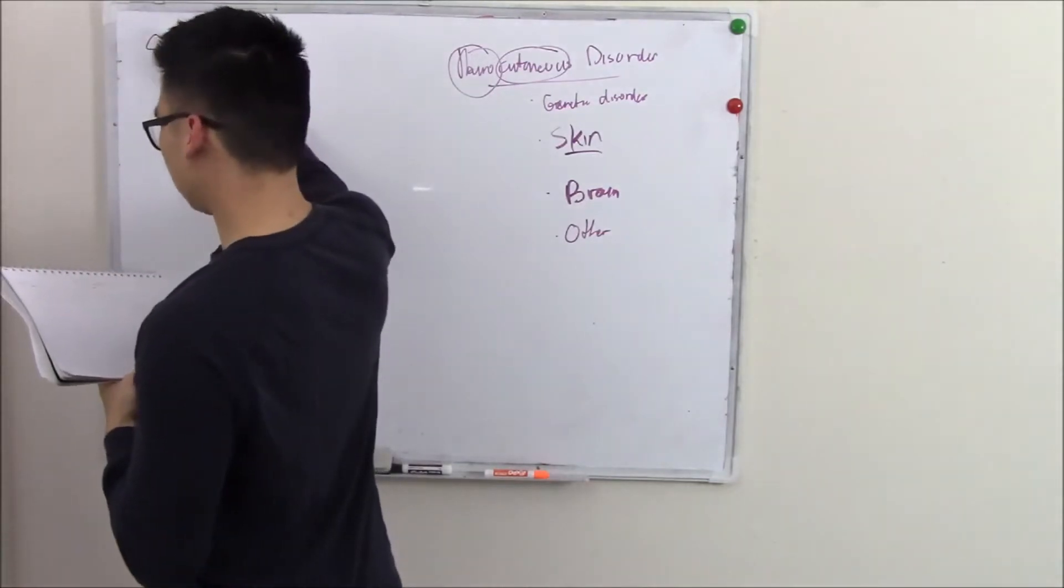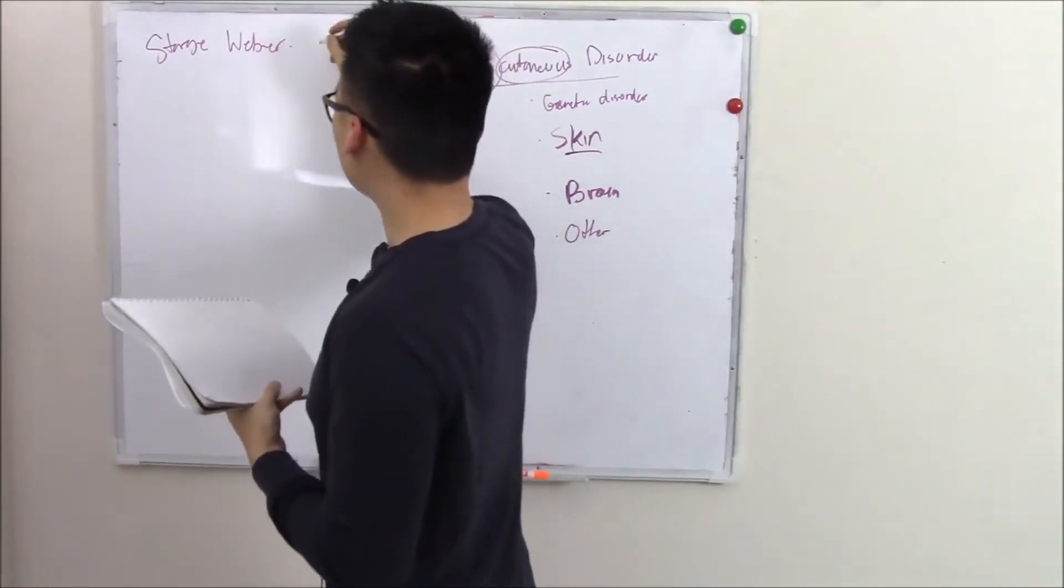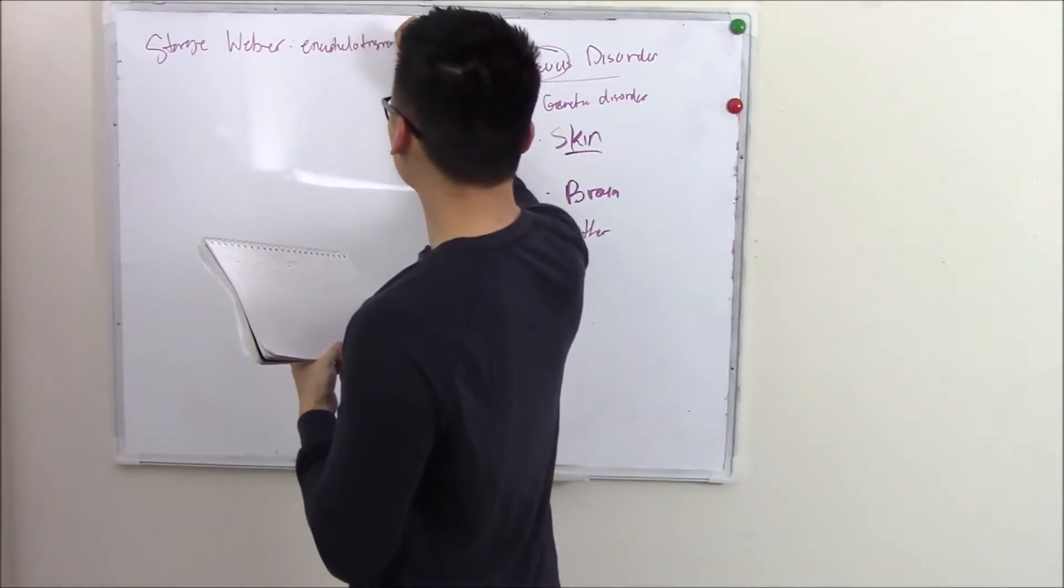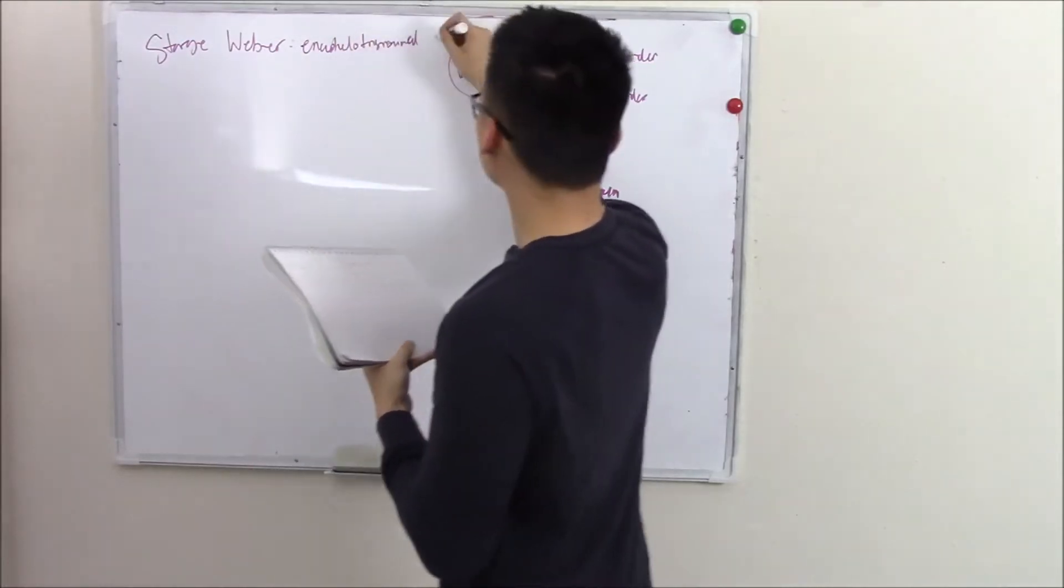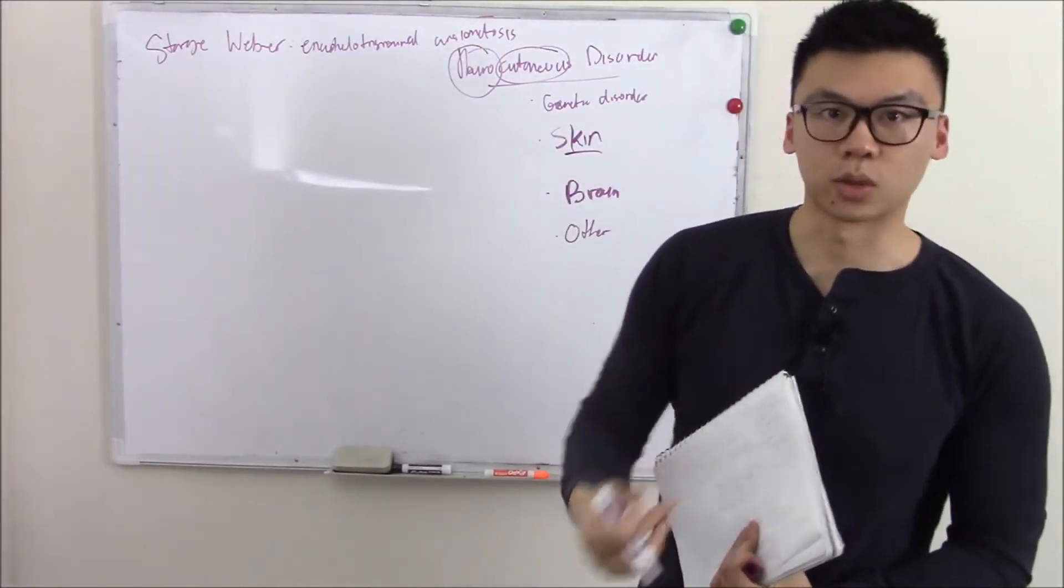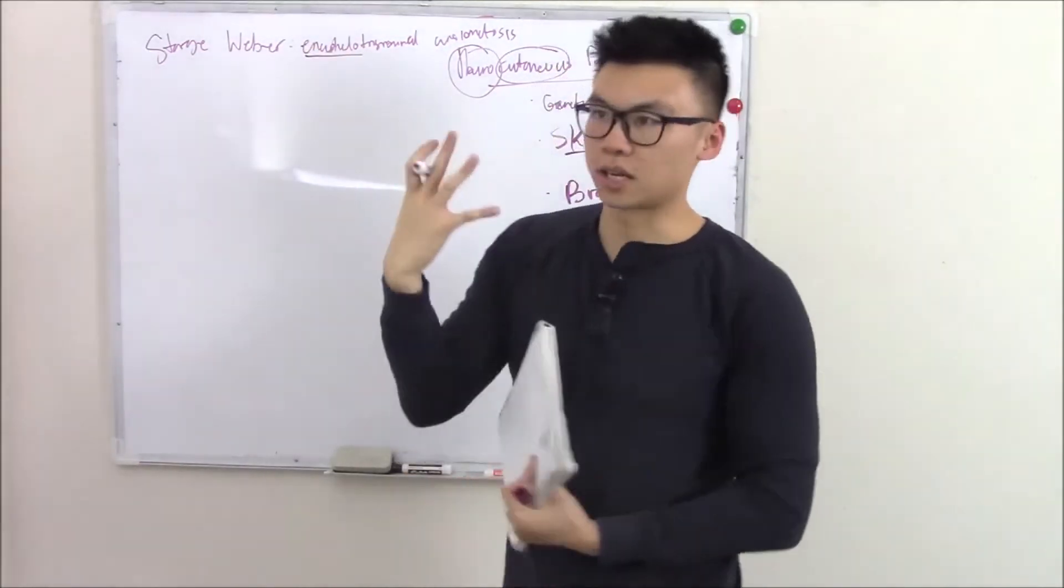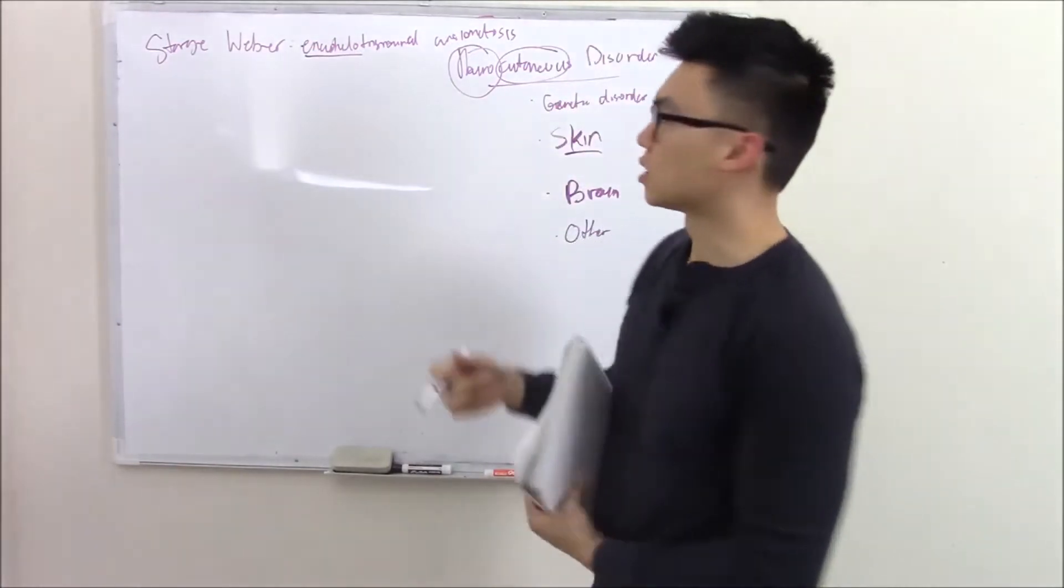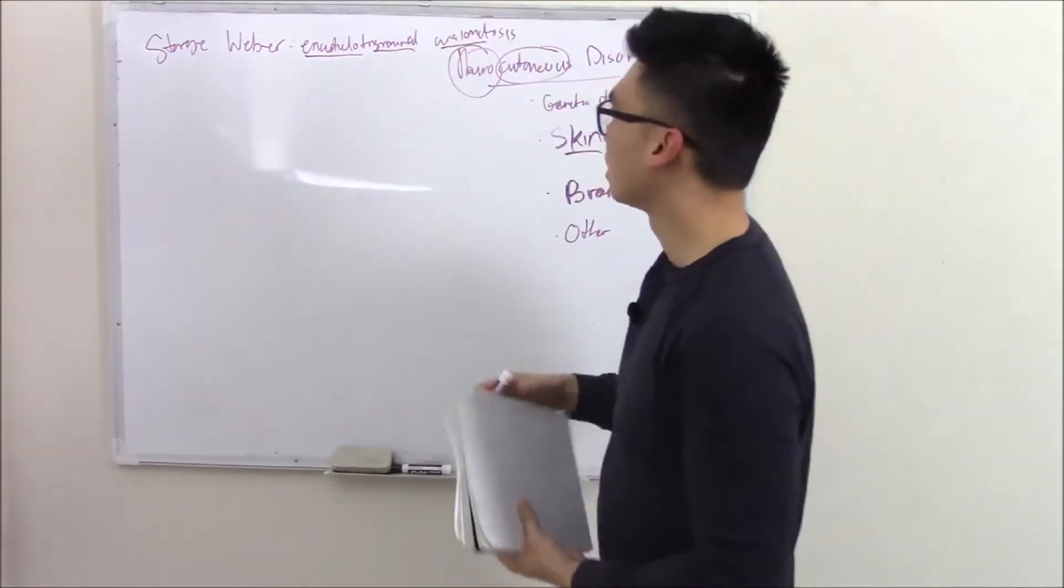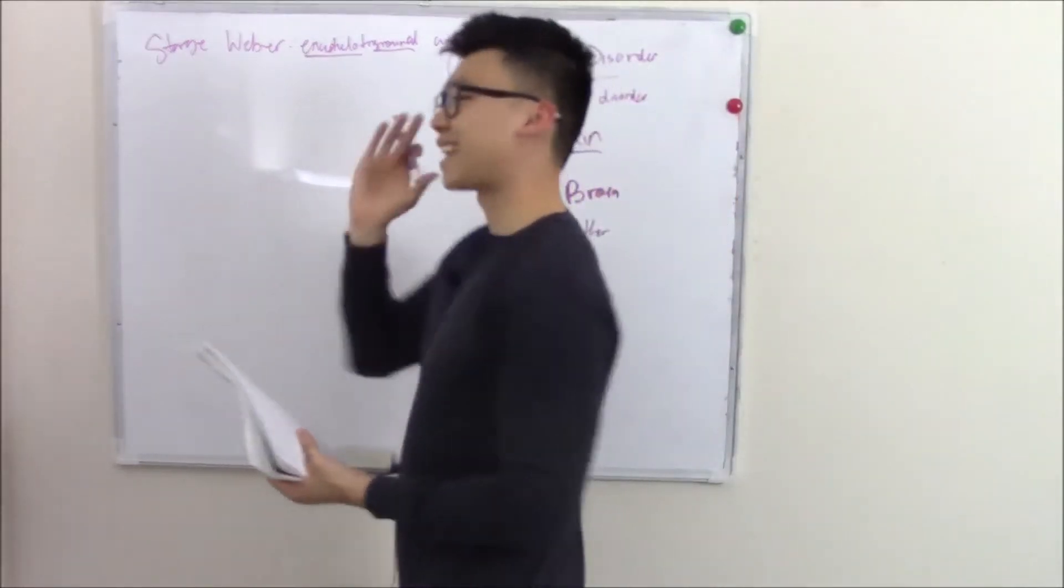Let's start with the first one: Sturge Weber. Sturge Weber is better known by the scientific name encephalo-trigeminal angiomatosis. I like the scientific name because it gives away the disorder. This involves the brain (cephalo part), the trigeminal nerve or its distribution (trigeminal part), and blood vessels (angio part). That's exactly what it does.